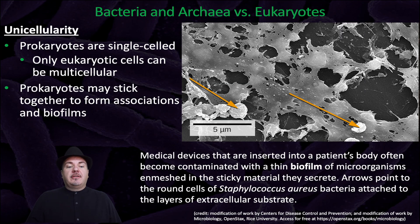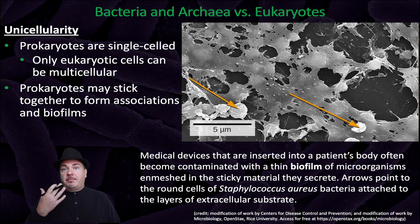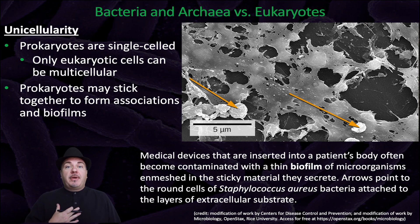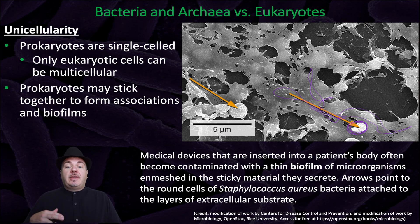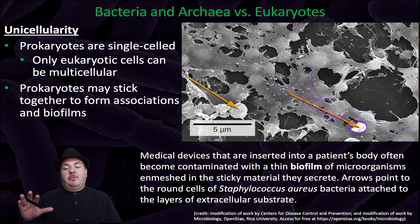Even though they're unicellular, prokaryotes may stick together to form associations and biofilms. We often think about this in terms of the plaque buildup on our teeth, or the biofilms that accumulate on implanted medical devices inside humans. For example, this is from an implanted medical device. You can see in this figure these Staphylococcus aureus bacteria, and surrounding them is a sticky material that they secrete — that creates the biofilm, helping them adhere to the device.